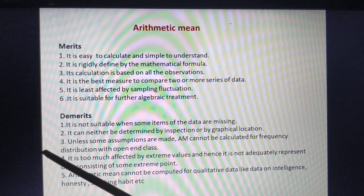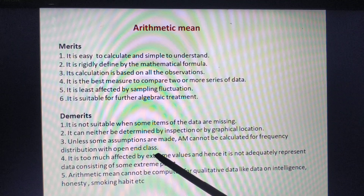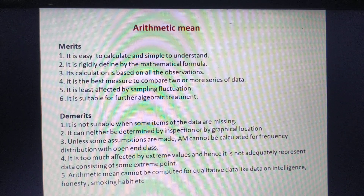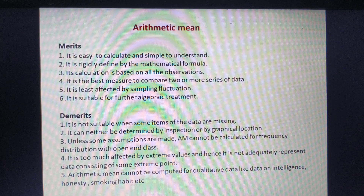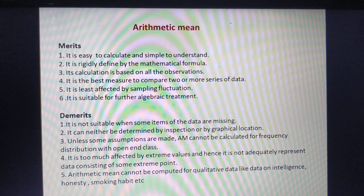The third demerit is that unless some assumptions are made, arithmetic mean cannot be calculated for frequency distributions with open-end classes. For open-end classes — such as '90 and above' — we cannot find the mid value. We need to close the interval by assumption, for example treating '90 and above' as '90 to 100', then taking the mid value of 95.